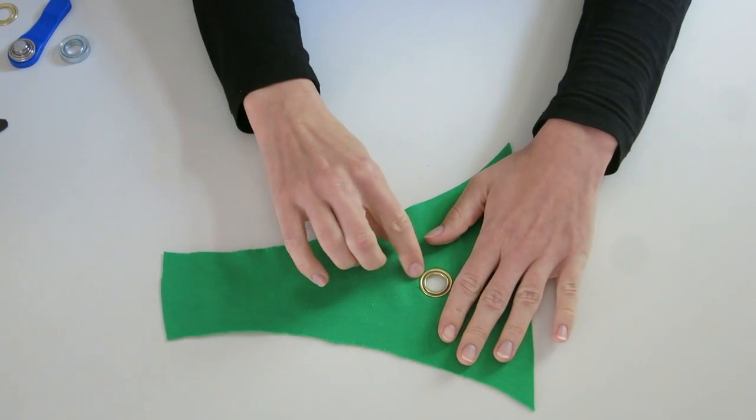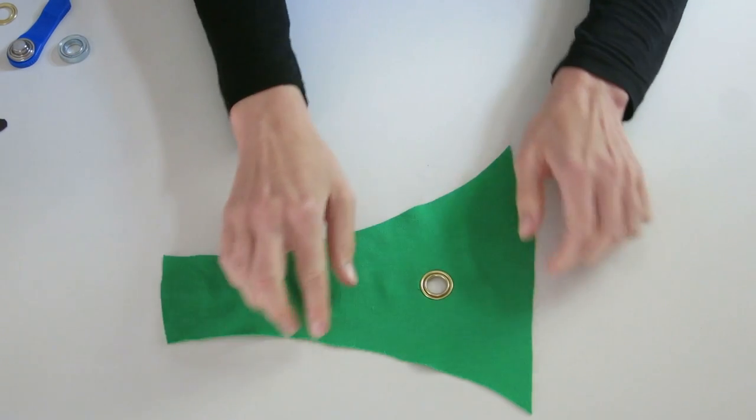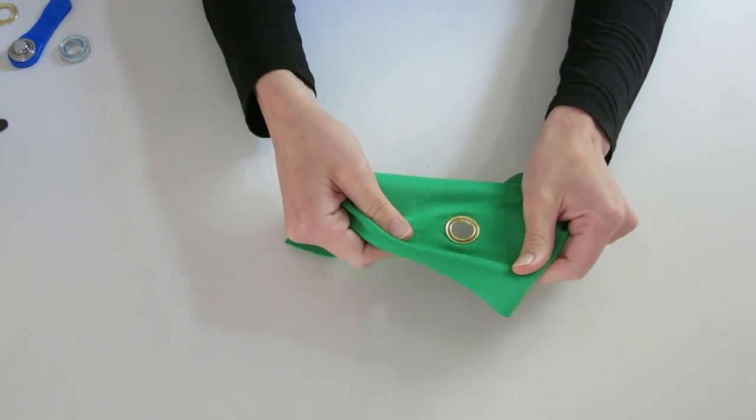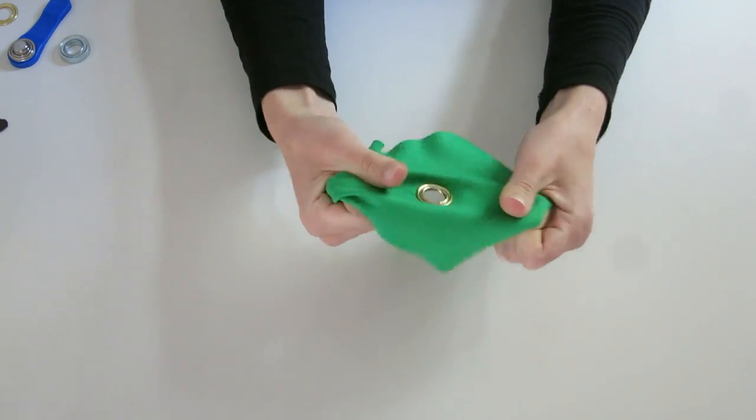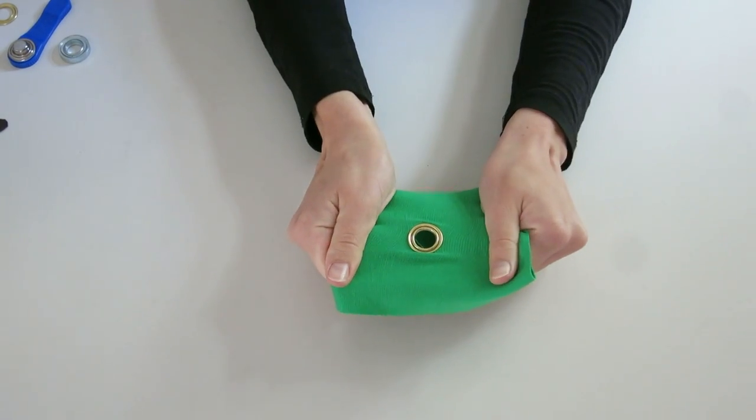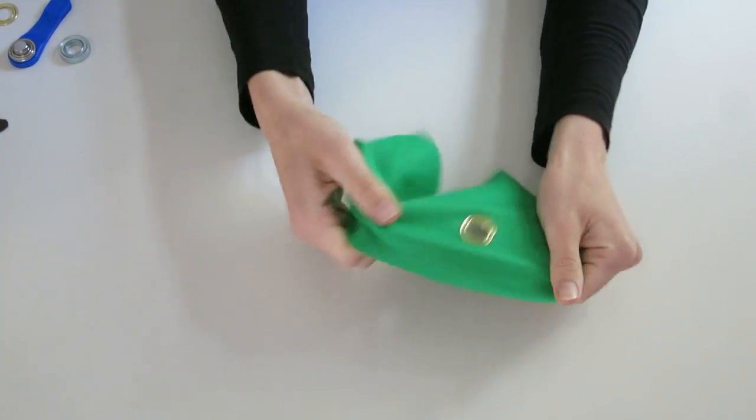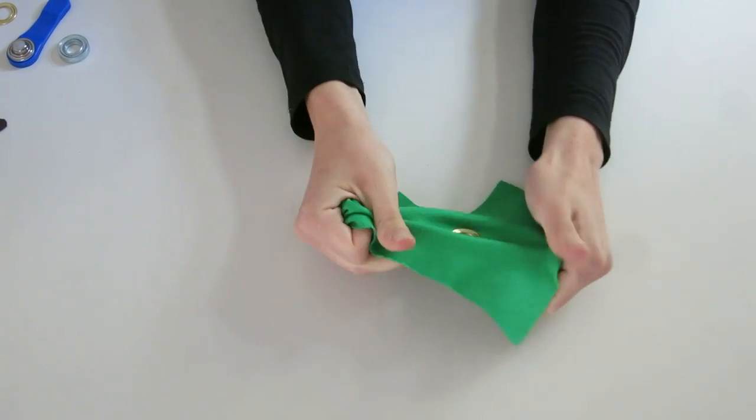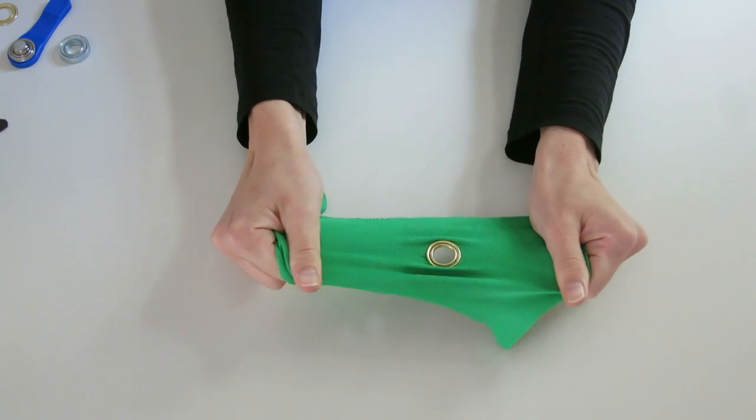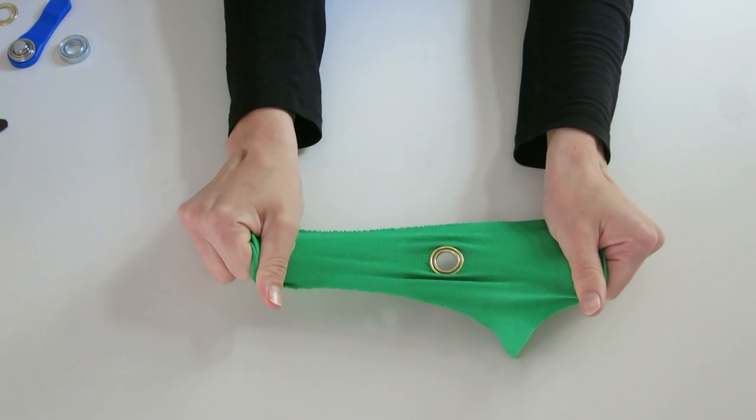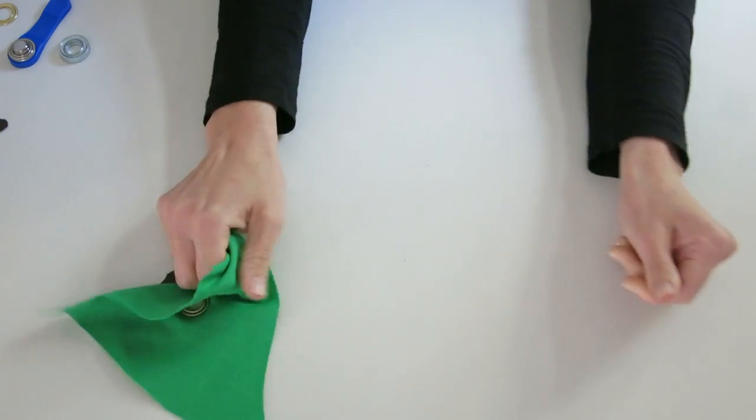Afterwards you can see that the eyelet nicely covers the stitching. If I'm now pulling very strongly, you can see that even under these conditions the eyelet holds in place. So the stretching fabric isn't leaving the eyelet even if I'm very strongly pulling.